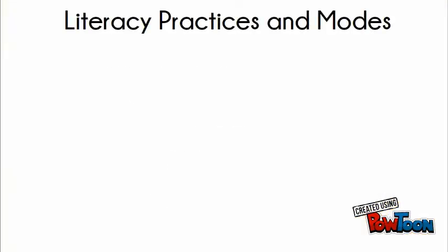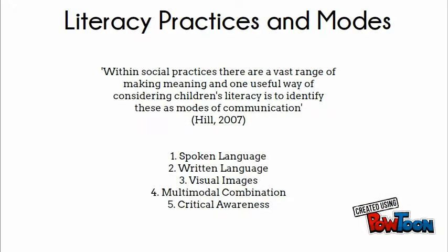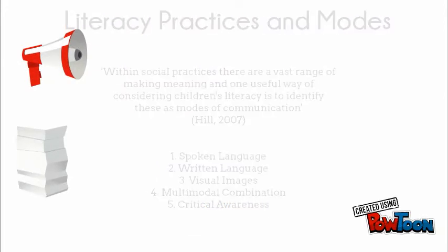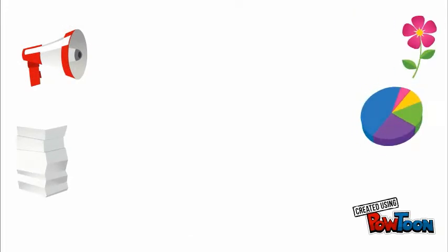Within social practices there are many different ways of making meaning, and one useful way of considering children's literacy is to identify these as modes of communication, such as spoken language, written language, visual images, multimodal combinations and critical events.